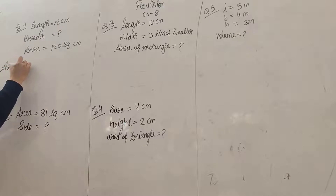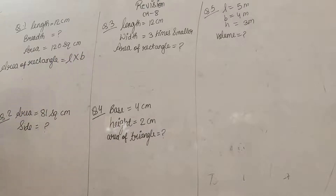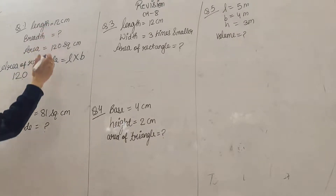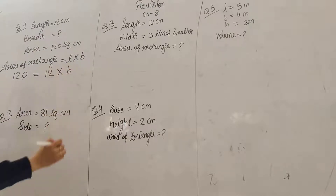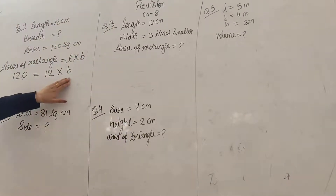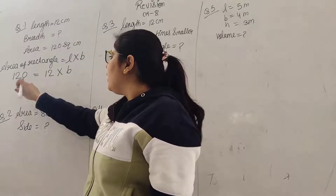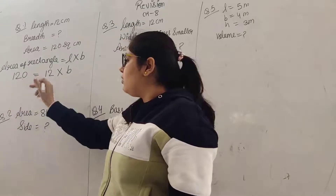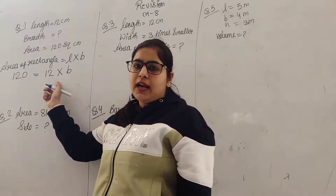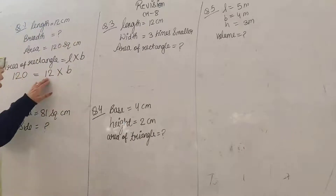First I will write: area of rectangle is equal to length into breadth. Here the area of rectangle is 120, length is 12 cm, और breadth हमें find करनी है. Breadth find करने के लिए, इस 12 को मैं इधर लेकर आऊँगी. तो 120 में जब मैं 12 को इधर लेकर आऊँगी, यहाँ पर 12 multiply का operation perform कर रहा है. तो जब मैं इसको is equal to के next लेकर आऊँगी, it will perform divide.